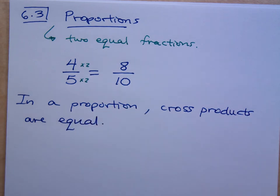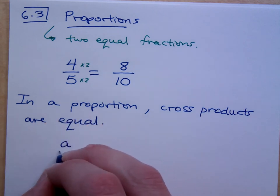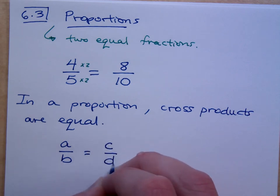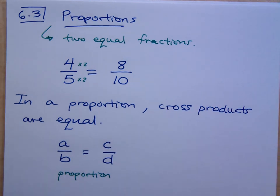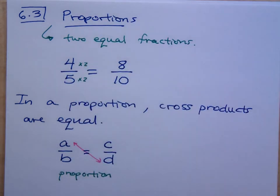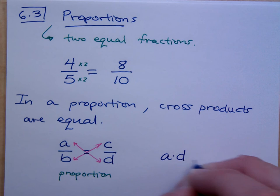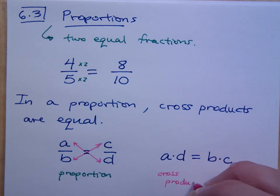That means that when you have the proportion that looks like this, a over b equals c over d, this is the proportion. That means that the cross products, and here's what the cross products look like, the cross products are the product across the equal sign like this and like this. So that means the cross product a times d is equal to the other cross product b times c. So these are the cross products here, and here these guys are equal.